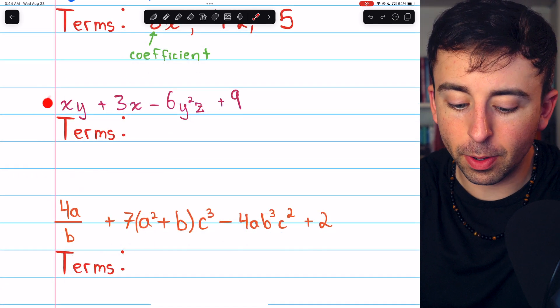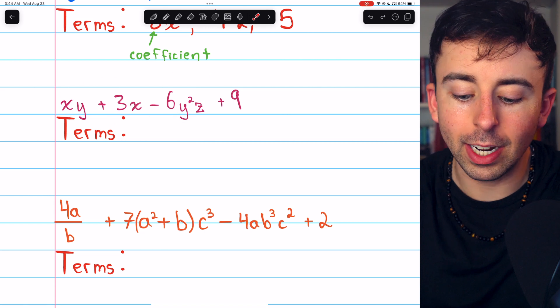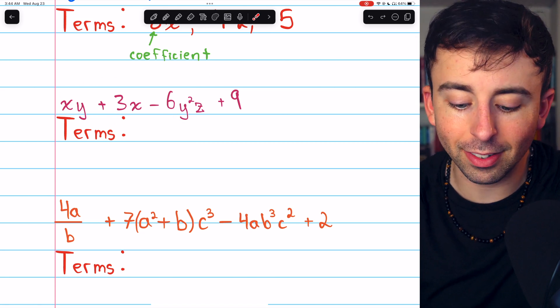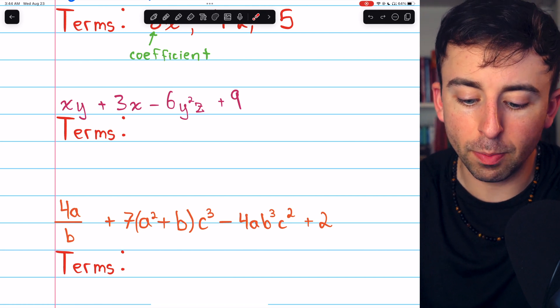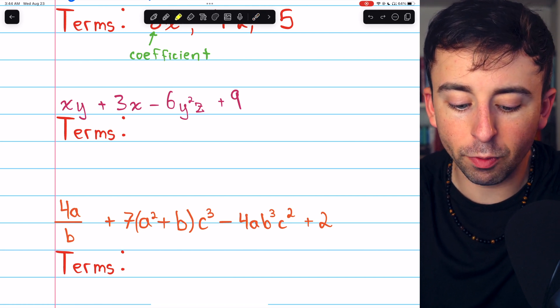Let's look at this next example, xy plus 3x minus 6y squared z plus 9. The terms of this expression are the components being added or subtracted. So in this case, there are four terms.